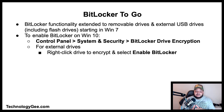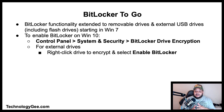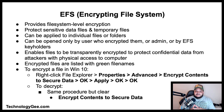BitLocker to Go: in Windows 7 and later versions, BitLocker functionality was extended to removable drives and external USB drives including flash drives. To enable BitLocker on Windows 10, go to Control Panel, hit System and Security, then BitLocker Drive Encryption. For external drives, just right-click the drive to encrypt and select Enable BitLocker.